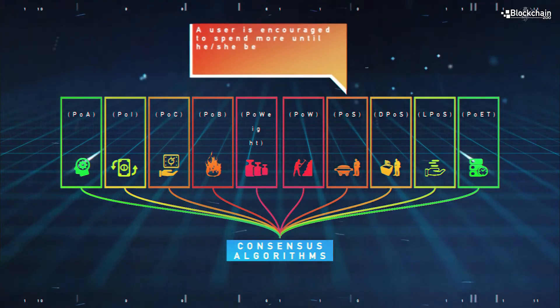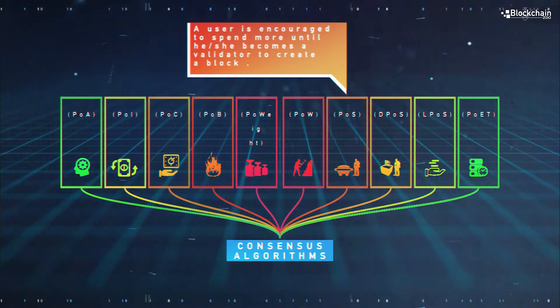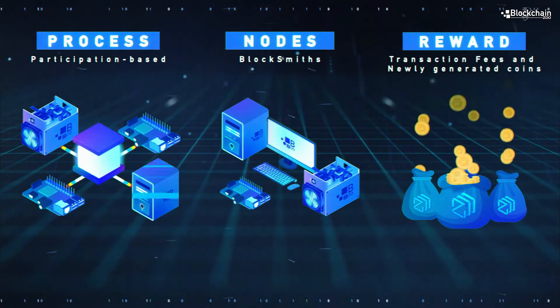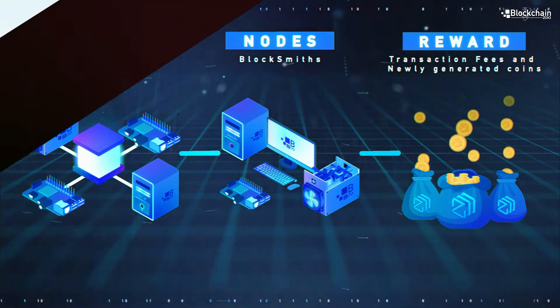Since then people have also proposed to use proof of stake, so we use the amount of funds on the network that people already possess to determine their voting power, and several others such as proof of capacity or the one that we're developing in Blockchain Zoo which is proof of participation.